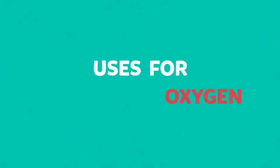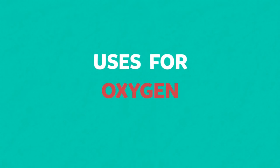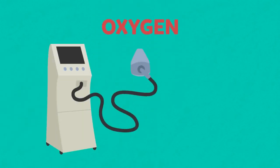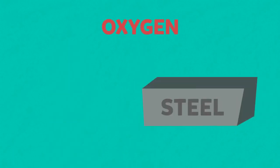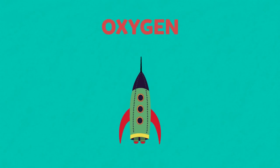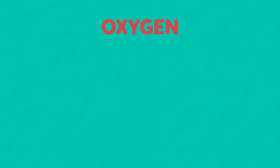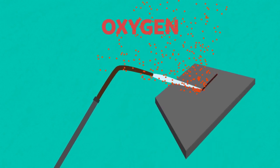Finally, oxygen is essential for our breathing and survival, and therefore it's used in medicine for breathing equipment. Oxygen is also used for steel making — the oxygen is passed through impure molten iron in the blast furnace to oxidise and remove impurities such as carbon, sulphur, phosphorus and silicon. Oxygen is also an essential part of rocket fuel, and it's used to fuel oxyacetylene flames for cutting and welding.